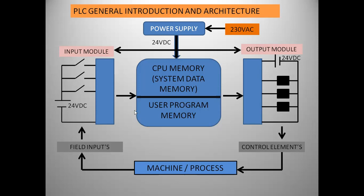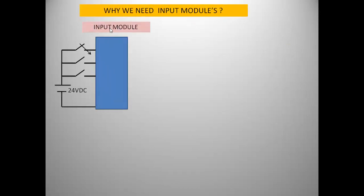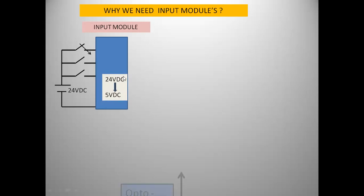This is a general overview of the PLC architecture with input modules and output modules. Now, why do we need separate input modules? When we have inputs, the signal that is applied enters into the input module. Inside the input module there is an optocoupler between the circuits, which converts the signal to 5 volt DC.